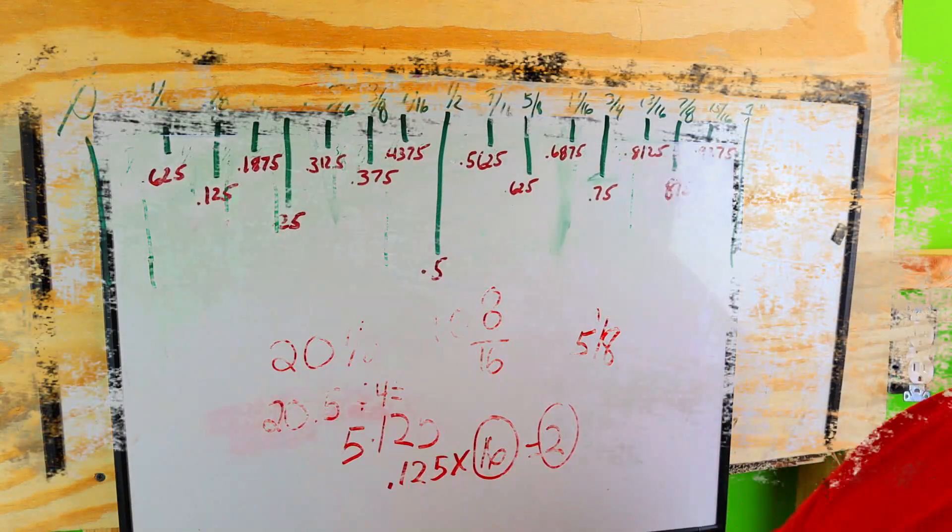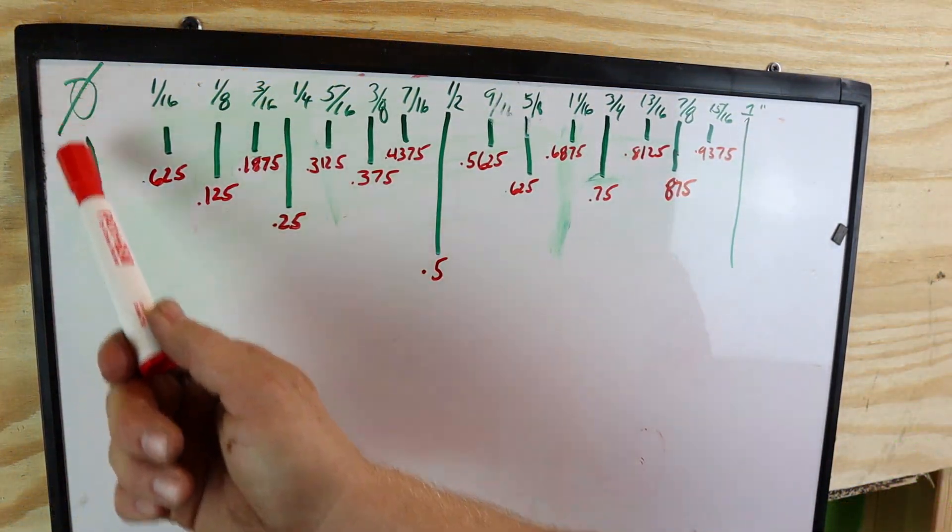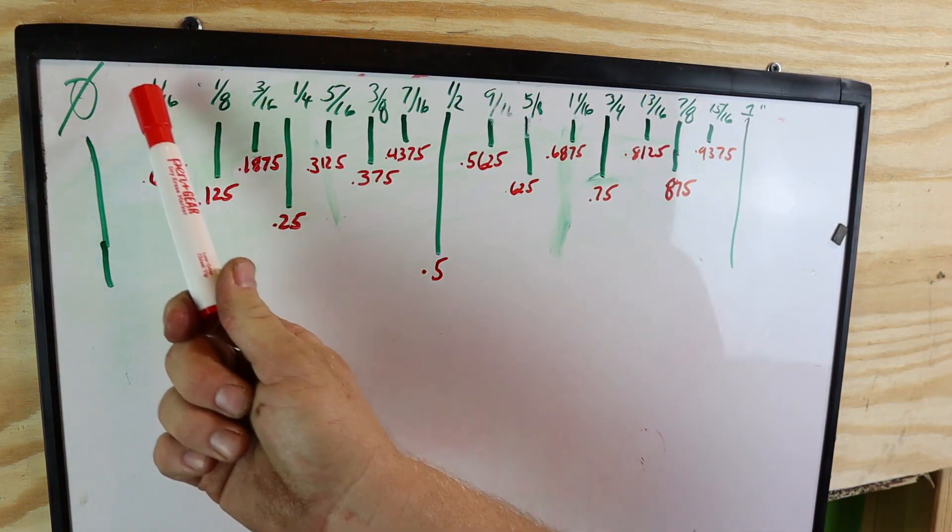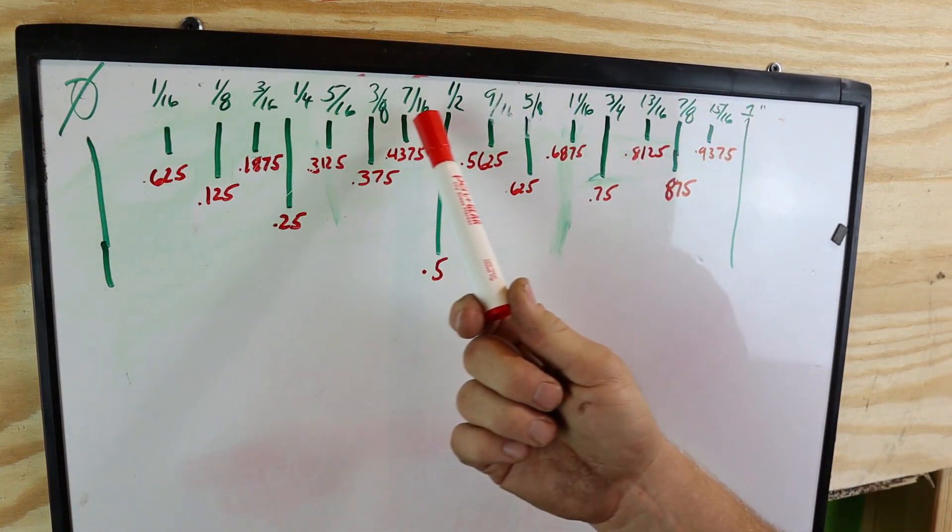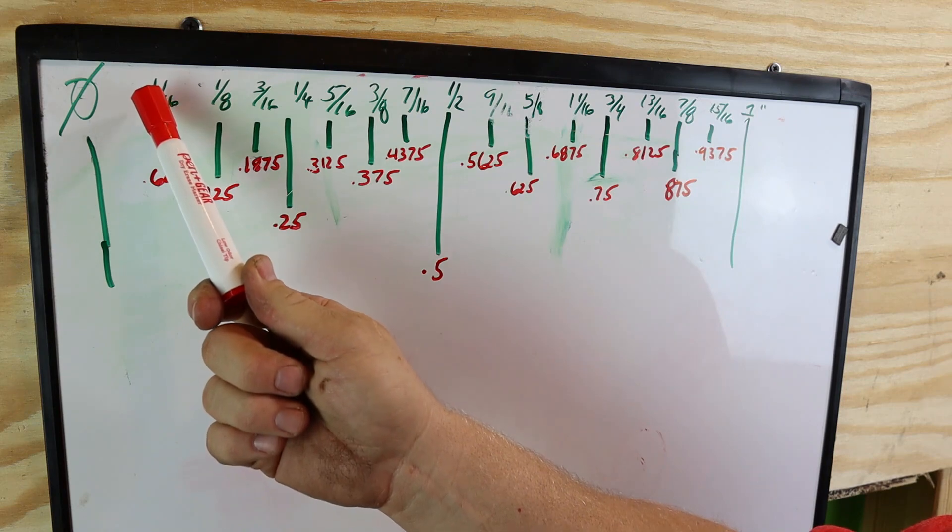You can do it no matter where you are in this scale. Now if you can see this at zero, there's nothing there. So these are your decimal points all the way through your measurements, on your fractions to decimals.